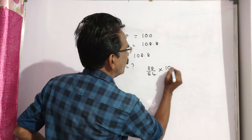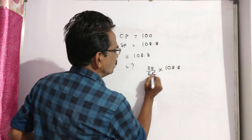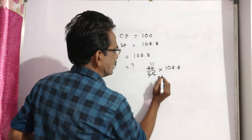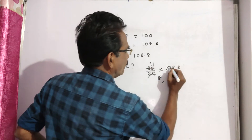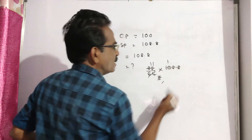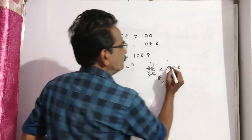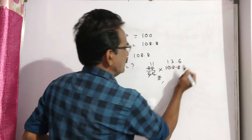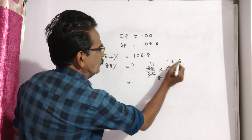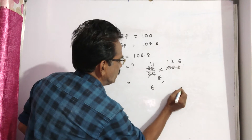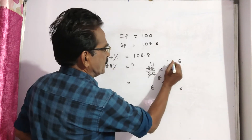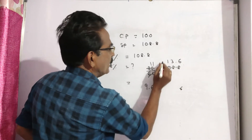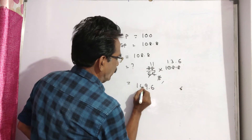Computing 88 by 64 into 108.8: this simplifies to 13.6 into 11, which gives 149.6.